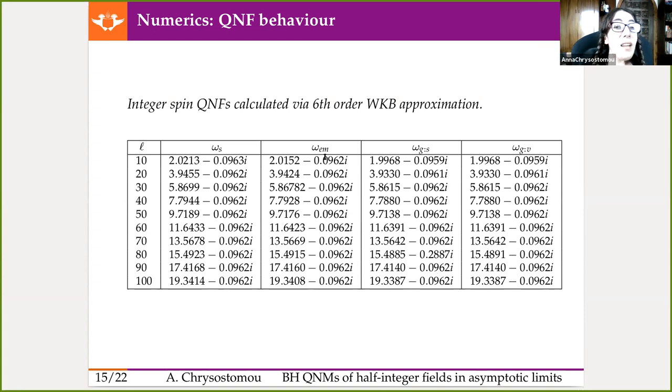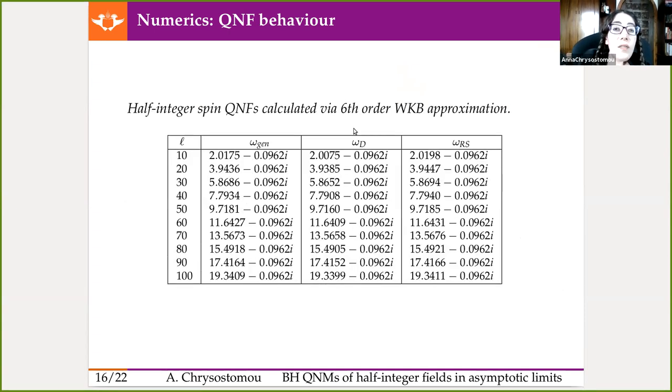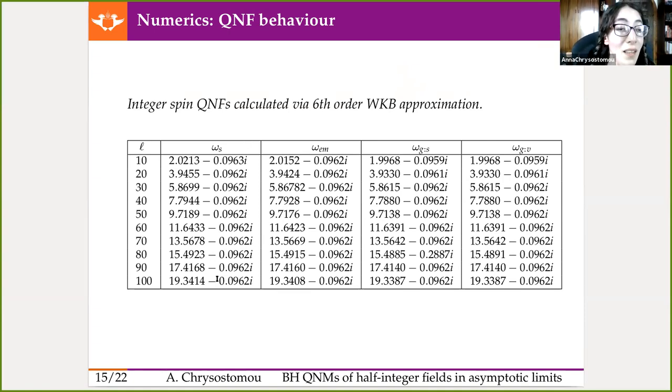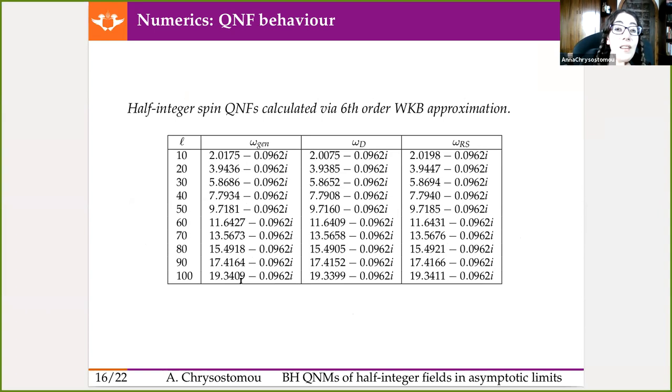In order to investigate how the quasi-normal frequencies behave in this large L limit, we applied the six-order WKB approximation. Now, what we found was a feature that is similar and confirmed in the literature already, at least in the lower cases. And that's that the frequency decreases for increased spin. And that held for both the integer and half-integer cases. But one thing I'd like to draw your attention to is this common 0.0962 form, right? Because that corresponds to the Lyapunov exponent, which has to do with the decay rate of a perturbation for the spherically symmetric black hole. In particular, for the case that we're looking at here, that applies to the Schwarzschild black hole. So we have the fact that the real part continues to increase for increasing L, and the imaginary reverts to a constant. And those features are summarized here.